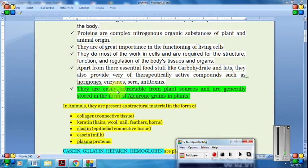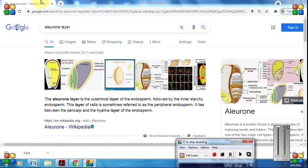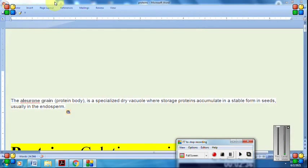Apart from their essential foodstuff role like carbohydrates and fats, they also provide therapeutic role as components such as hormones, enzymes, sera, and antitoxins - they are all proteinaceous in nature. They are easily extractable from plant sources and are generally stored in the form of aleurone grains. The aleurone layer is the outermost layer of the endosperm, followed by the inner starchy endosperm. It constitutes both the outermost layer as well as the inner starchy endosperm.